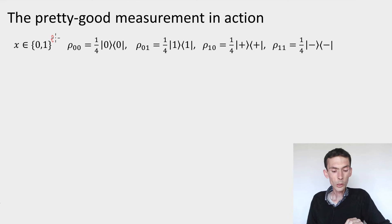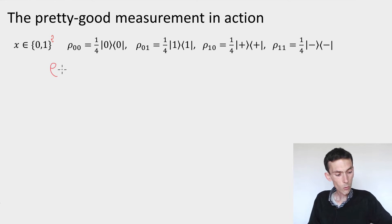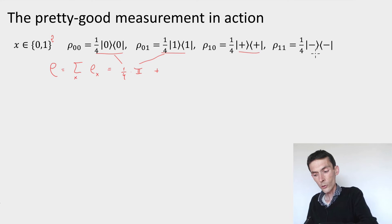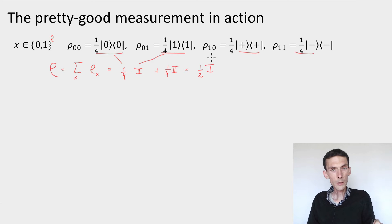How do we compute the pretty good measurement operators? First, we have to compute the average density matrix of the ensemble, which is just summing over all possible x. So I can compute ρ, which is the sum over all possible x of ρ_x. If you sum the first two, you get a quarter times the identity matrix, and if you sum the other two, you get again a quarter times the identity matrix. So I get one half times the identity matrix. These are single qubit states, so I can verify that the trace of ρ is one — it's a valid density matrix.